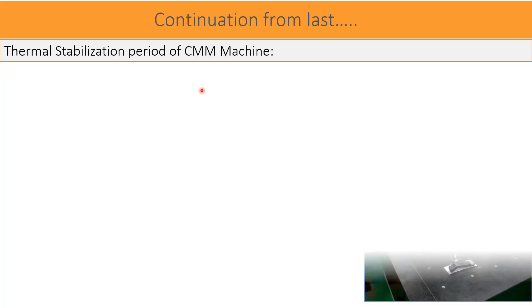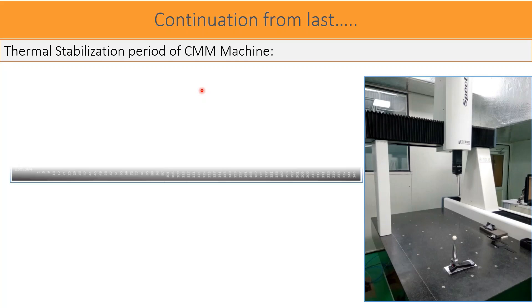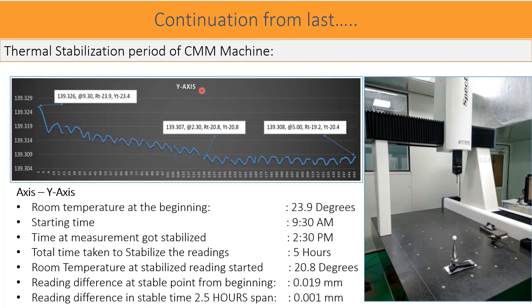The summary of the last video is that minimum 4 to 5 hours of time is necessary to thermally stabilize the CMM machine after switching on the air conditioning in the room. This means when you switch on the air conditioning, after 4 to 5 hours you can start doing the measurement.